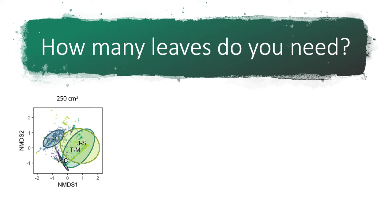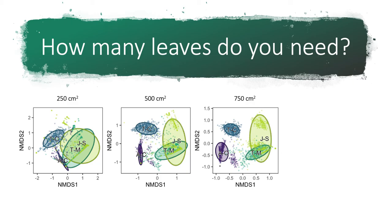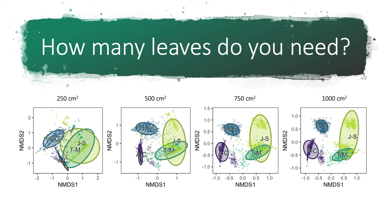We can increase the amount of surface area we subsample to in our NMDS plots. When we double it to 500 square centimeters, we suddenly see separation — previously at 250 square centimeters each plant host overlapped with at least one other, but now the ellipses are much smaller with much less overlap. Going from 500 to 750 square centimeters, the confidence ellipses become noticeably smaller in most cases. At 1,000 square centimeters, three of four plants show even smaller ellipses, but they're not getting much smaller, meaning we're getting less and less return for each additional leaf sampled.